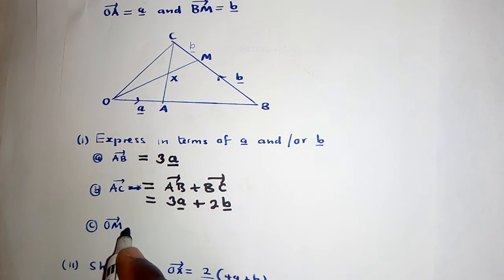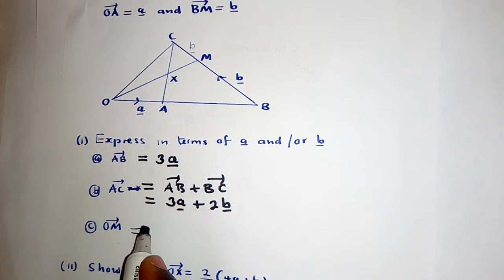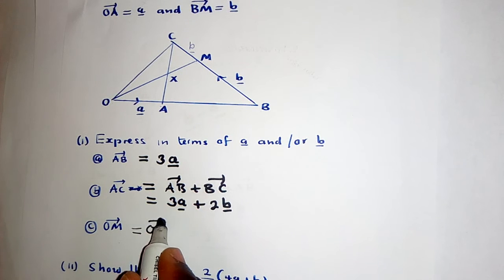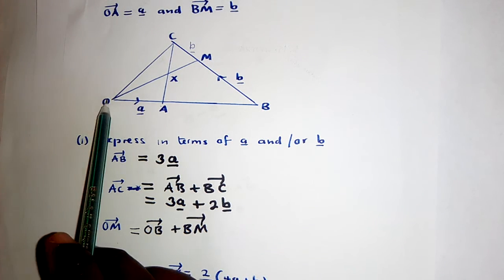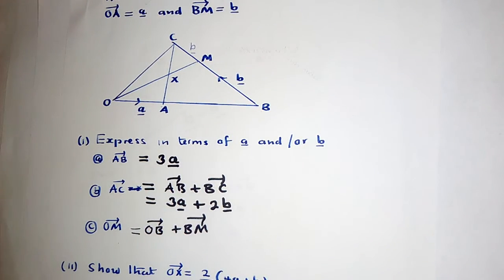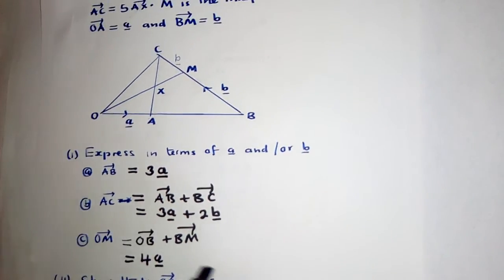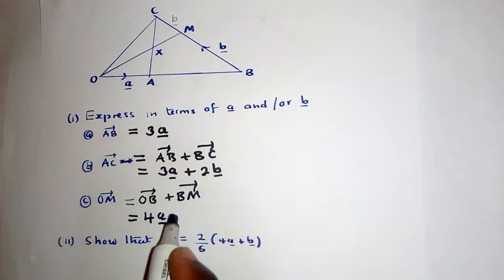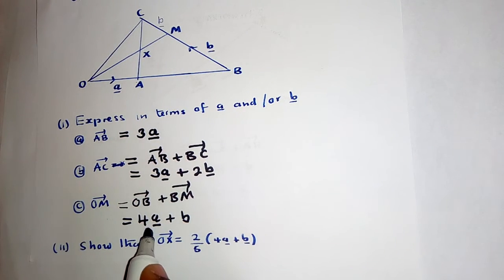We can now find vector OM. OM can be found as OB plus BM. If you don't want to move directly, you can move from O to B, then B to M. Our OB, as stated in the question, is 4A. This from O to B is 4A. Plus BM — BM is B. So OM equals 4A plus B. We are done.